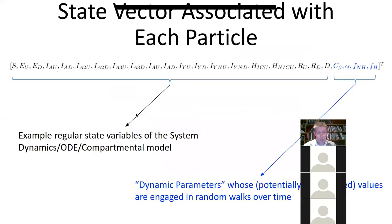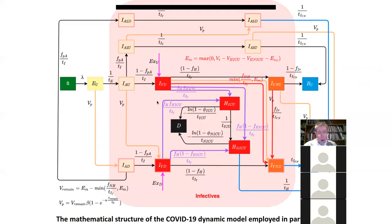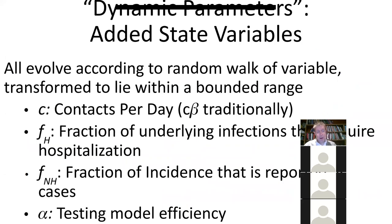The thing to recognize here is that each particle has a complete hypothesis about this. Each particle says: I think there's this many susceptibles, this many exposed persons, this many pre-symptomatic people, this many people who are infected and infective and outright symptomatic, this many post-symptomatic early stage, this many post-symptomatic later stage. It has this belief about the world — each particle has this kind of vector — and another particle will have a different belief with different hypotheses.